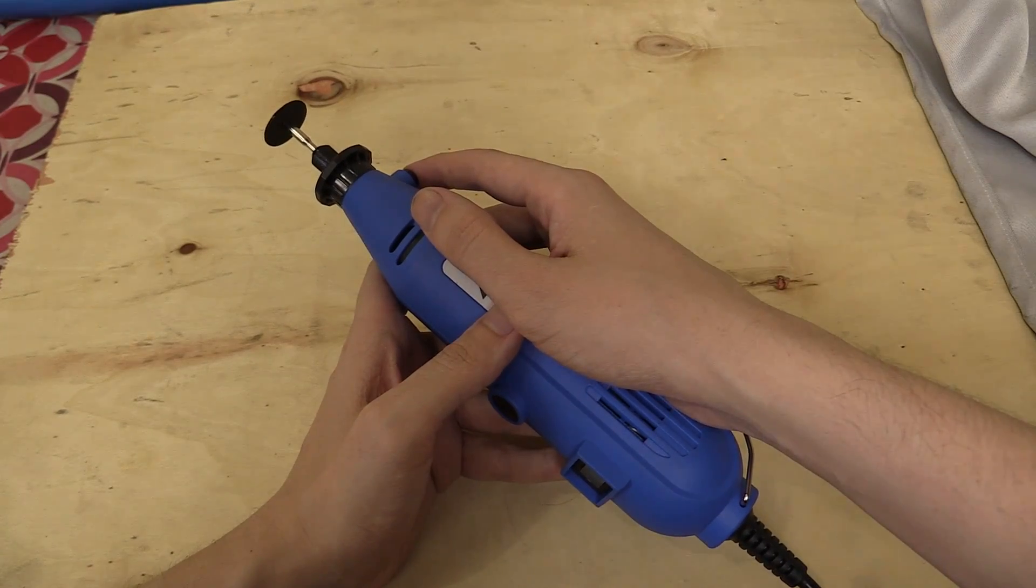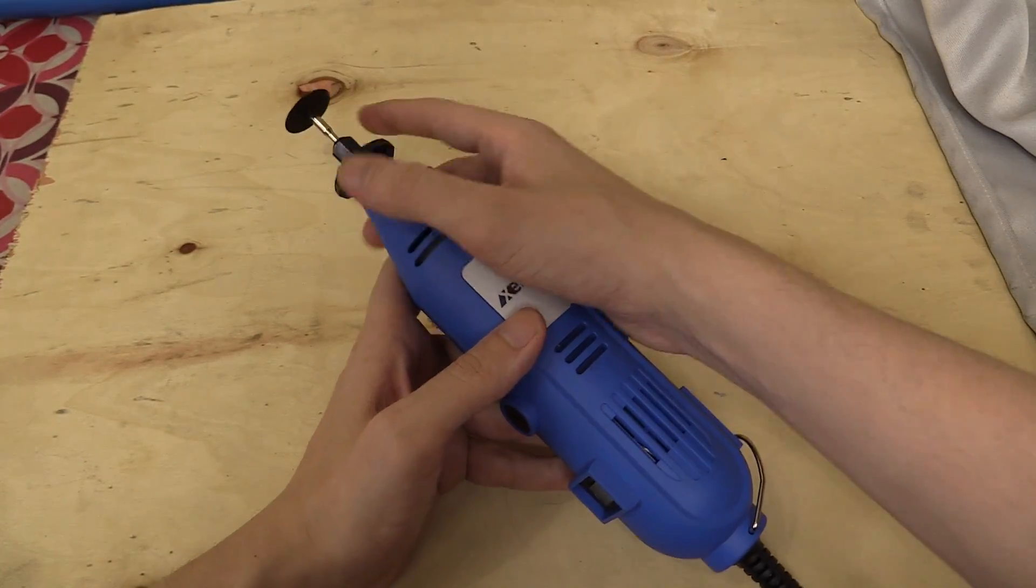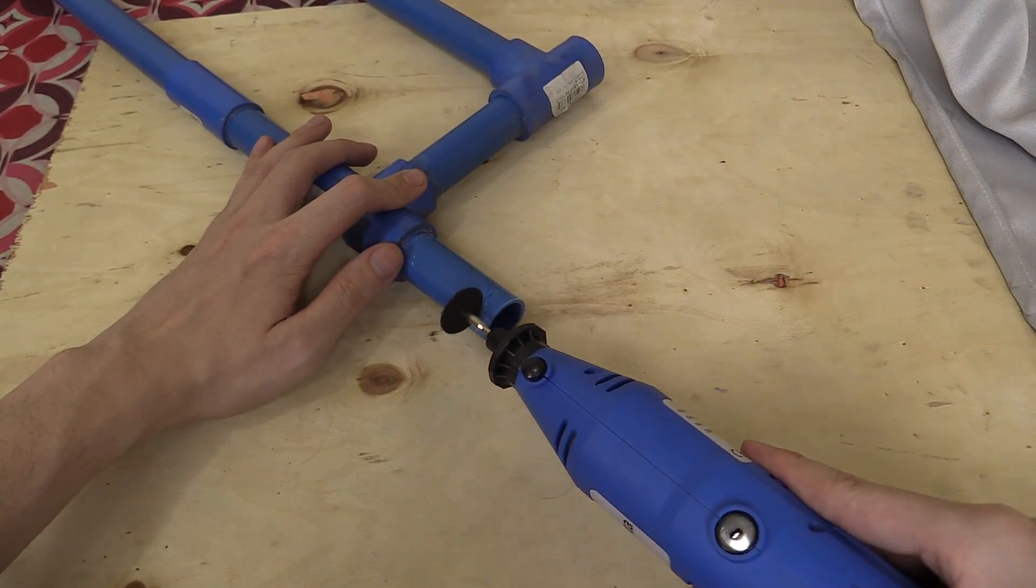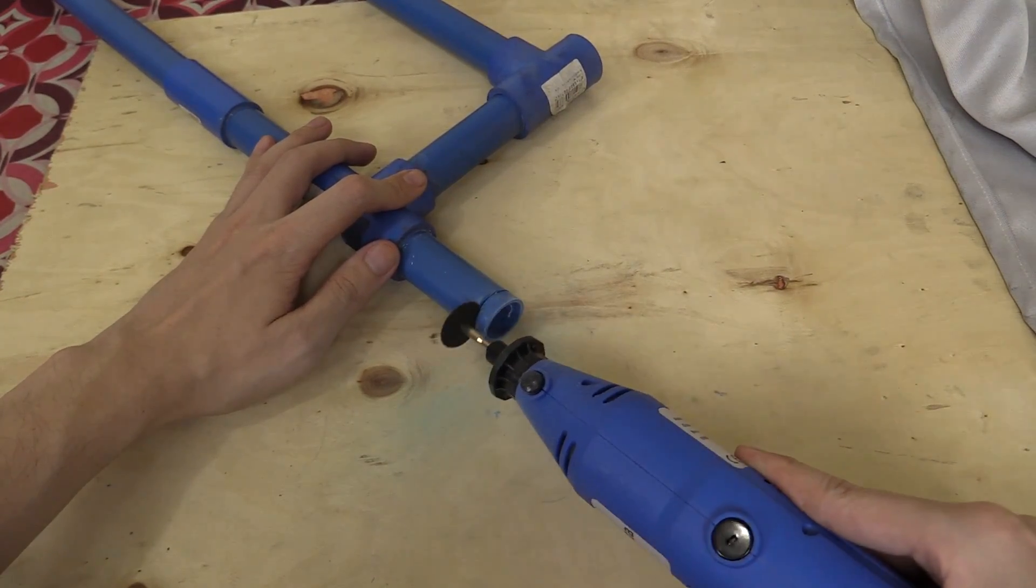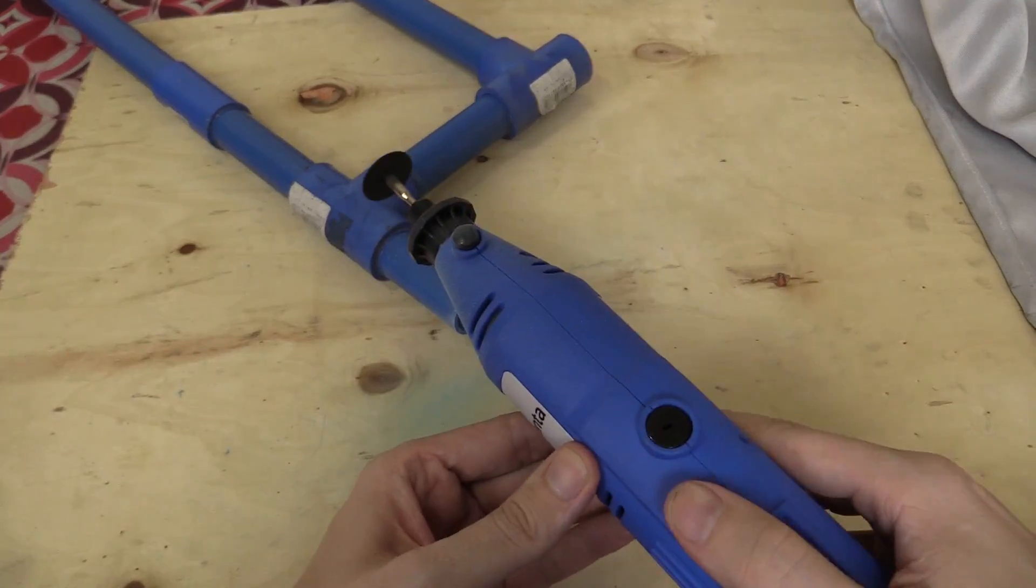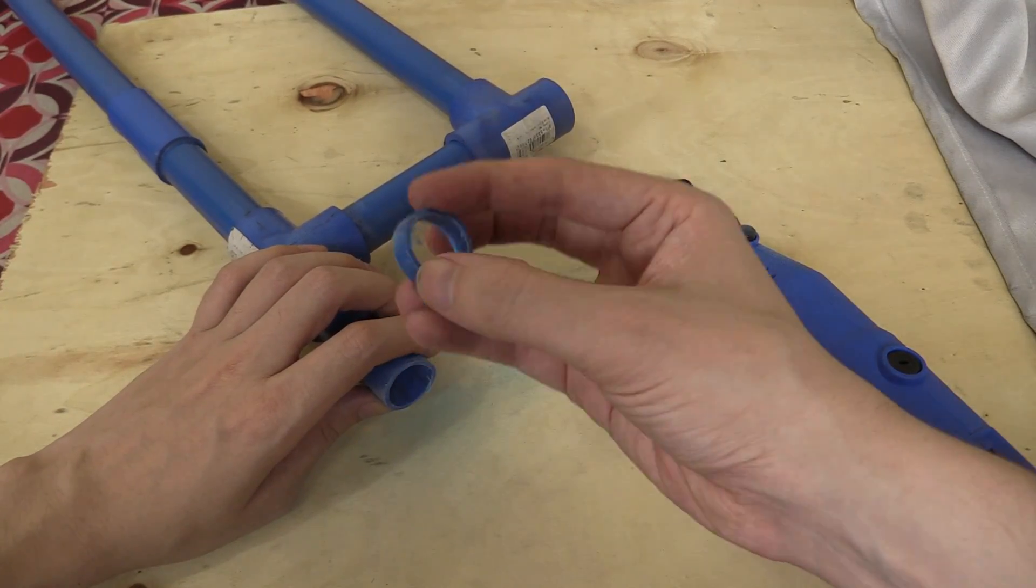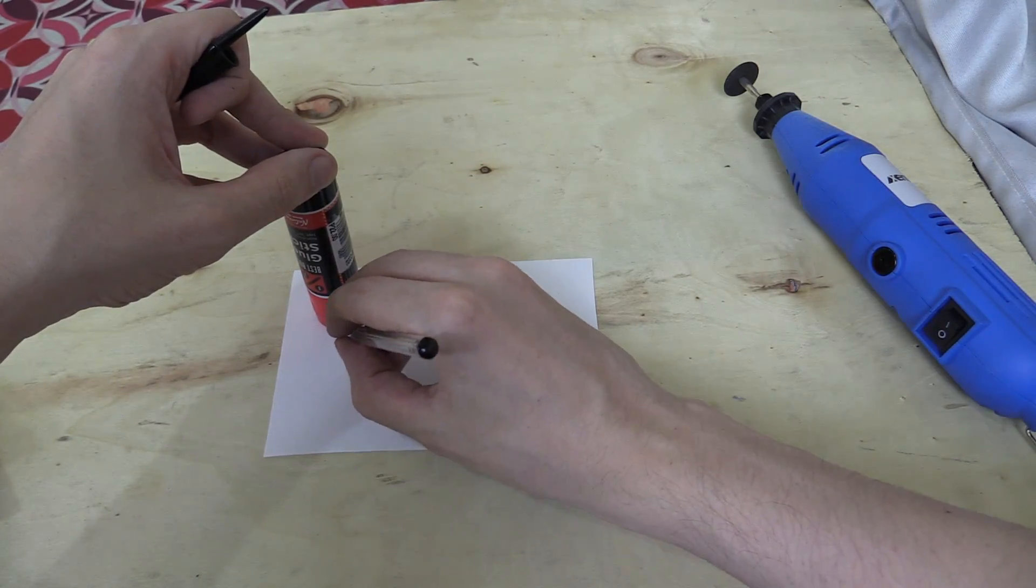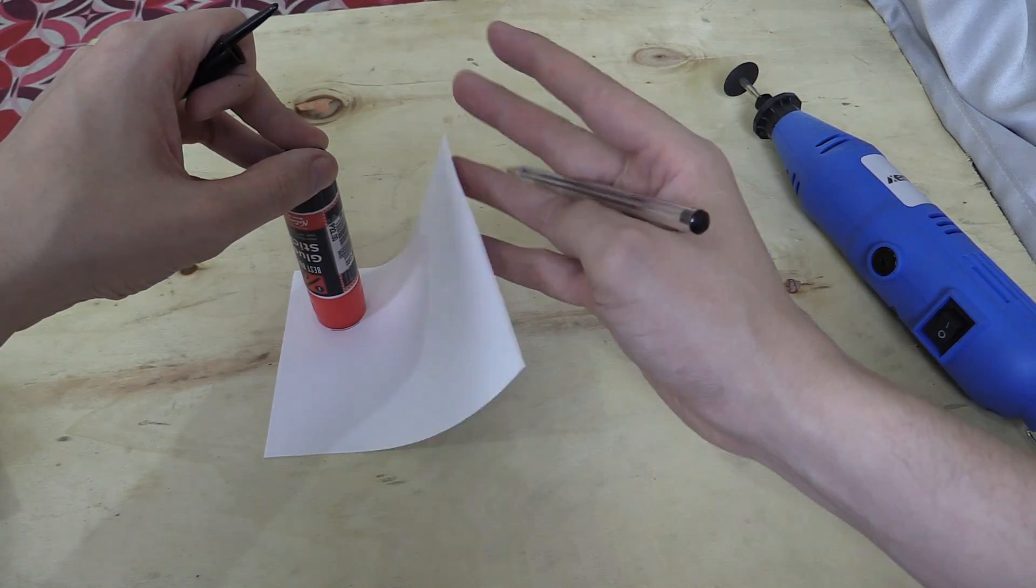But before we try and make our own paper blades let's try out one of the ones that came with it. And as you saw that had absolutely no problem cutting through this PVC tubing. Now let's go ahead and make our own blades out of regular printer paper.